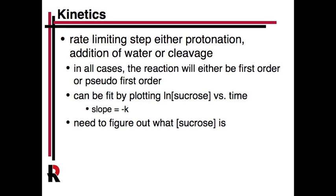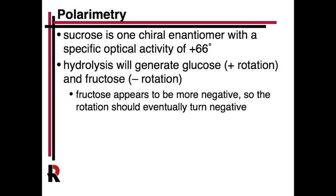If it's first order, we can use the integrated rate law and plot the natural log of sucrose concentration on the y-axis and time on the x-axis. In that case, the slope would be negative the rate constant. So we're going to do that, but we have to figure out the concentration of sucrose — and this is where we're going to use polarimetry.